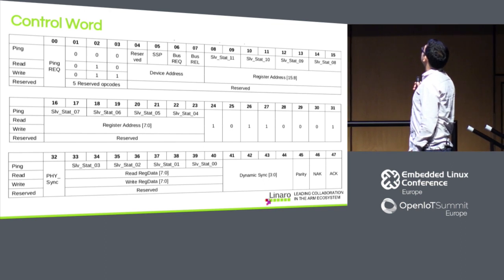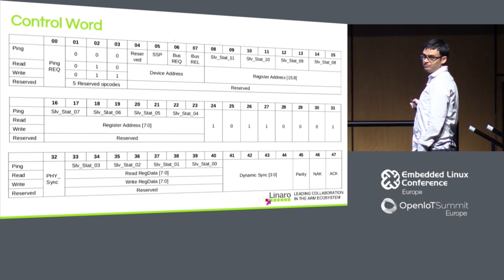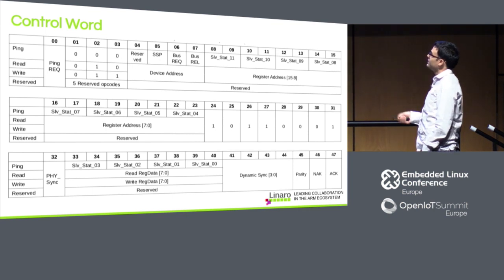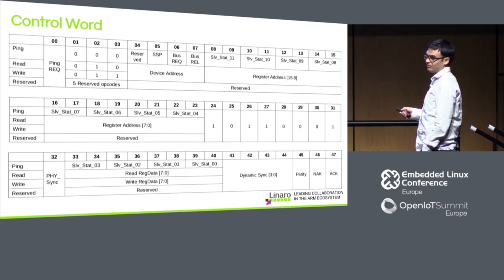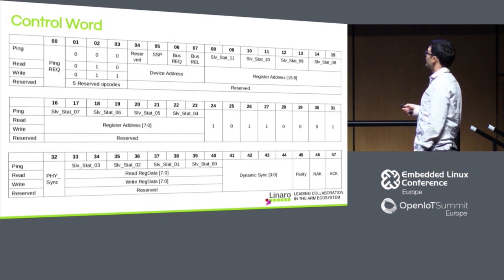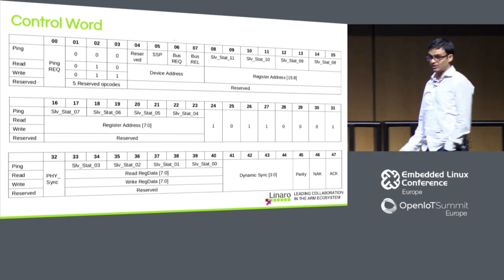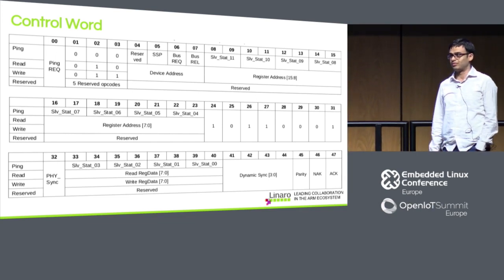The remaining three bits are the parity for frame verification. For a read or write operation: you send the opcode, device address, and register address. For a write, write data is placed in the frame. For a read, the slave puts the read data in the frame. Within that single frame, the whole read or write operation is performed, and the result — ACK or NAK — is given in two bits by the slave.